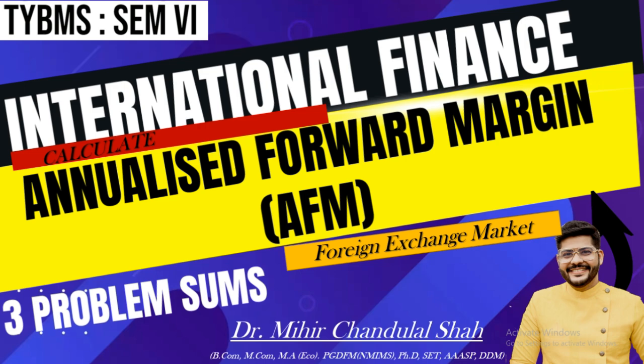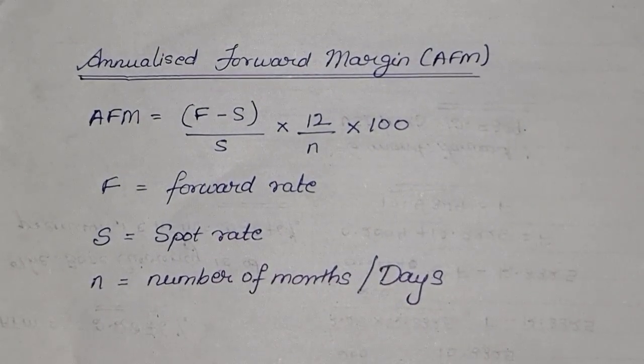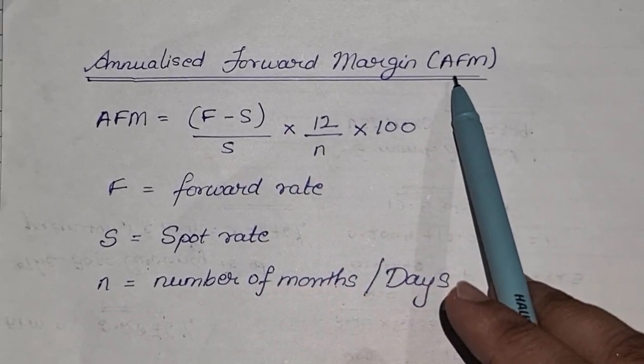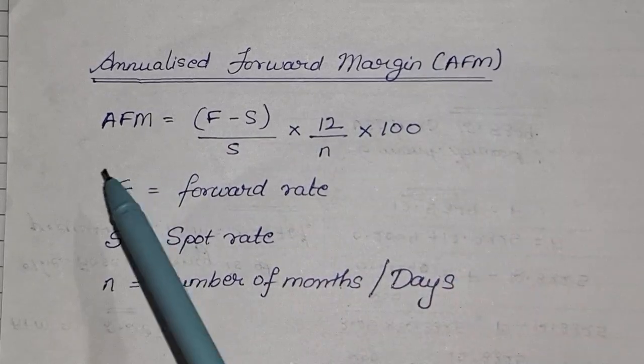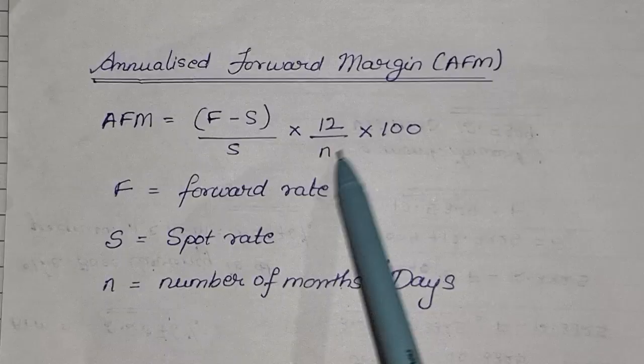Before starting to solve the sums, I will first show you the formula. We will note down the formula and thereafter solve 3 sums based on the same formula but finding different things. Annualized forward margin, known as AFM, is equal to: AFM = (F minus S) upon S, into 12 upon N, into 100.